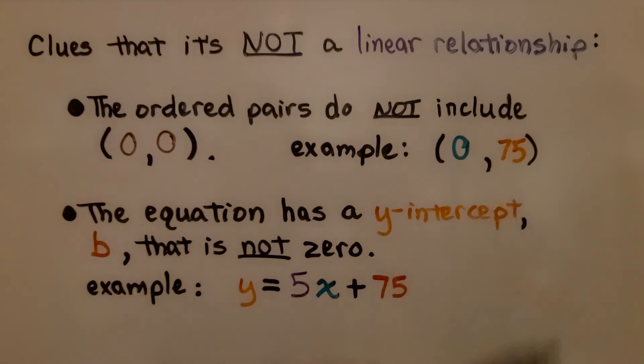There's some clues that it's not a linear relationship. The ordered pairs do not include (0,0). It was (0,75). And the equation has a y-intercept b that is not 0. y = 5x + 75, which tells us we've got to start at 75 even if x is 0. We're going to have (0,75). That's not going through the origin.